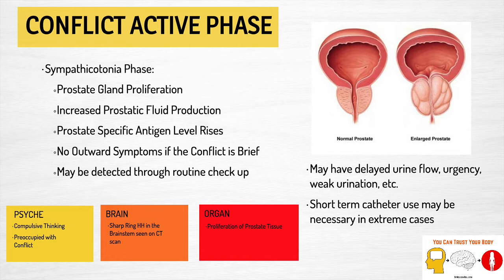When a man is in a conflict active phase of a prostate conflict, the prostate gland is going to proliferate — we're adding additional prostate gland cells, which increases prostatic fluid production. The PSA is going to rise because PSA is just a component of this prostatic fluid. There are typically no outward symptoms if the conflict is brief, as in nature these things would happen and then there would be a quick resolution. This may be detected on a routine checkup — if a man is having a PSA test going in for his yearly exam, he may not be having any symptoms at all.